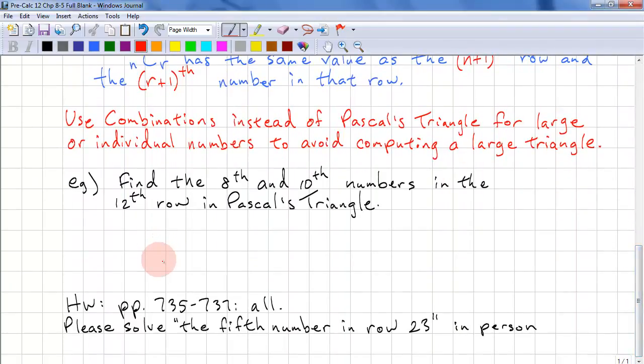Here's another example. Find the 8th and 10th numbers in the 12th row of Pascal's triangle. We subtract 1 from the row. So we have 11 choose and we take away one number here. So 11 choose 7. Punch that in on the calculator and you get 330.